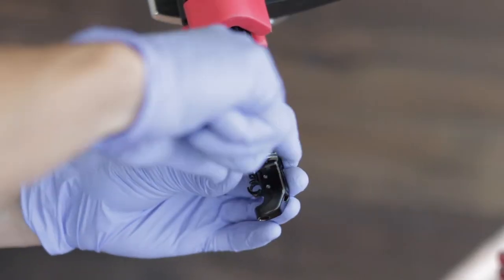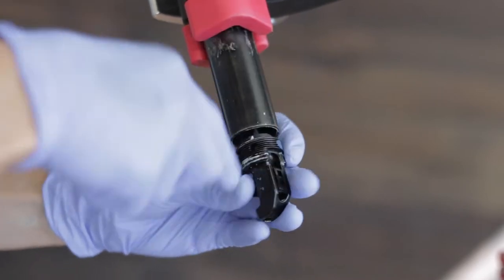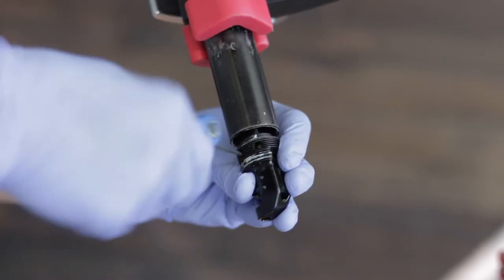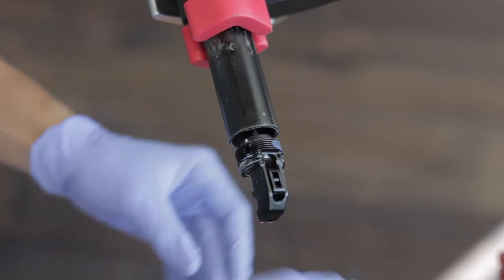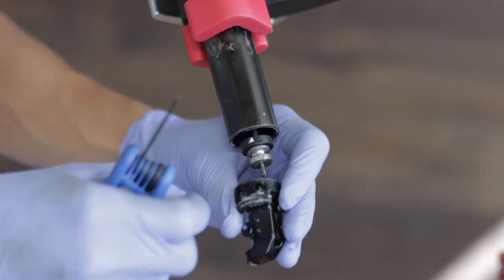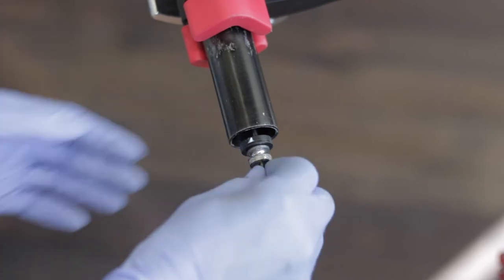You will see two small grub screws in the lower mechanism. Use a two millimeter allen key to completely loosen these out. You can now slide off the lower mechanism. Slide out the steel rod.